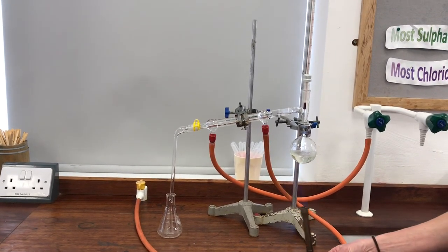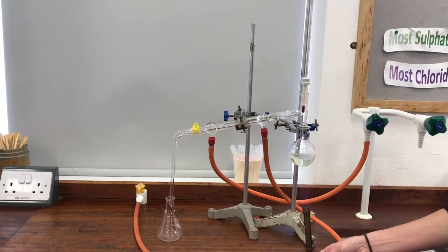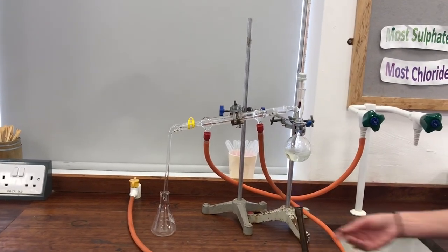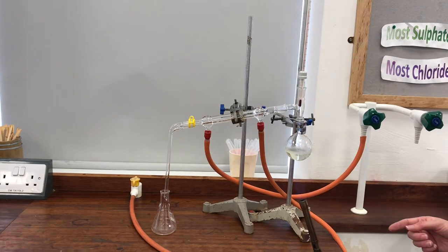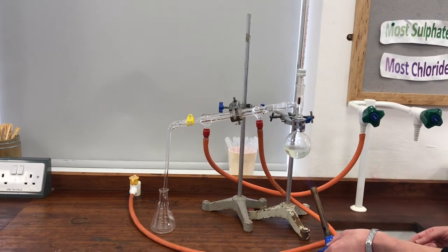Now if you look over at the flask at the other end here, you can see that there are drips of ethanol coming out of it, and we call that substance that we collect there the distillate. So it's the product of distillation.